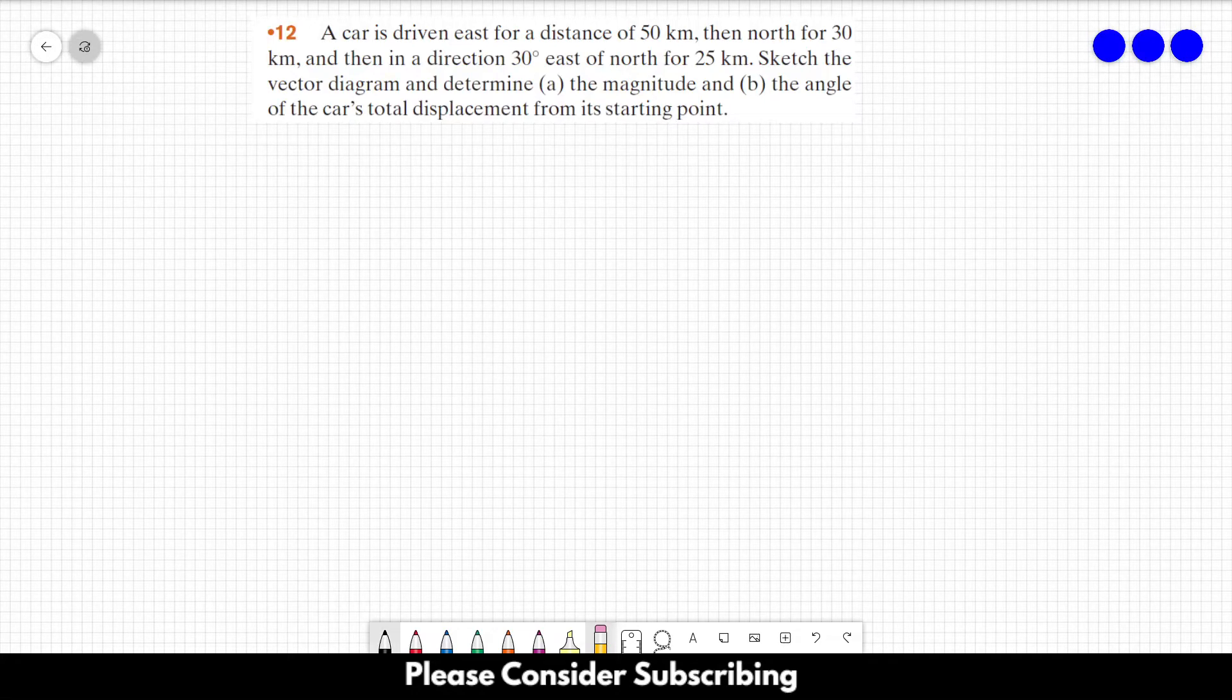Number 12. A car is driven east for a distance of 50 kilometers, then north for 30 kilometers, and then in a direction 30 degrees east of north for 25 kilometers. Sketch the vector diagram and determine the magnitude and the angle of the car's total displacement from its starting point.